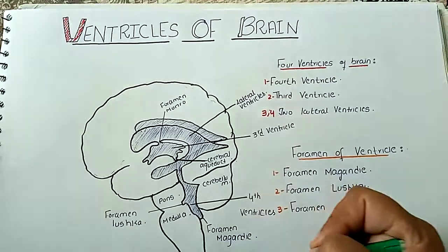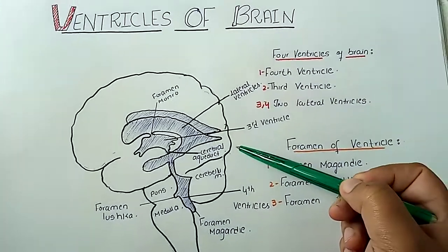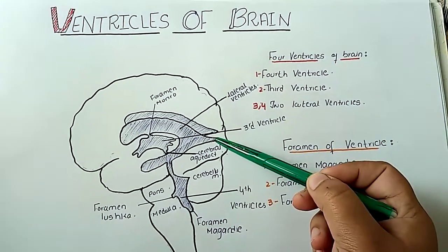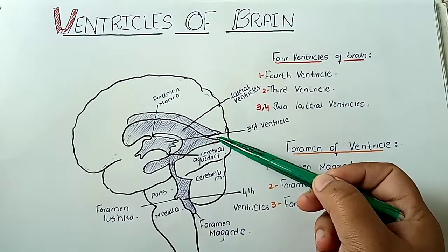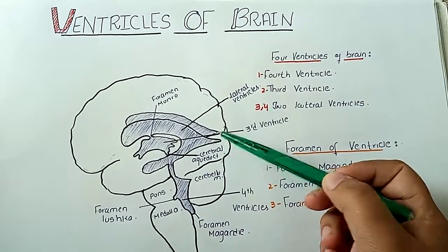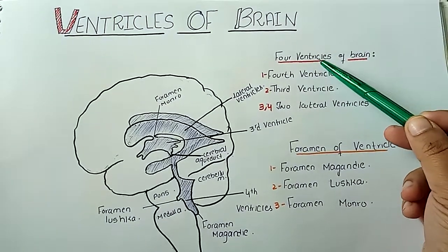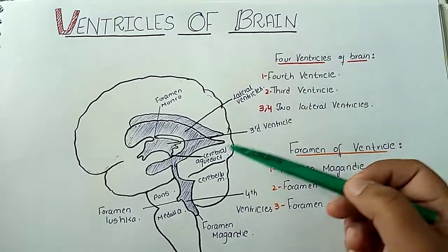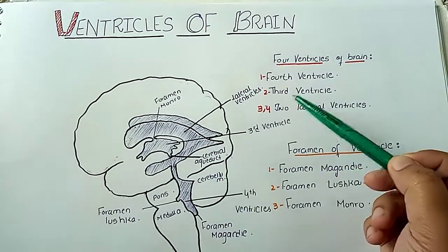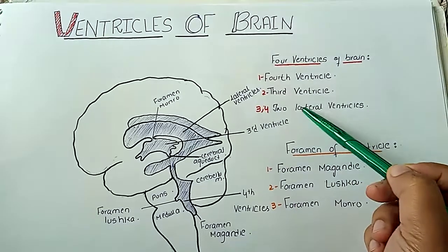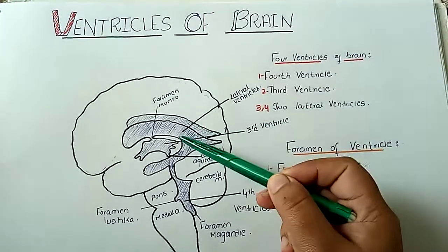This is the complete whole sketch which shows how the ventricles are located within our brain. There are a total of 4 ventricles: the 4th ventricle, the 3rd ventricle, and the 2 lateral ventricles.